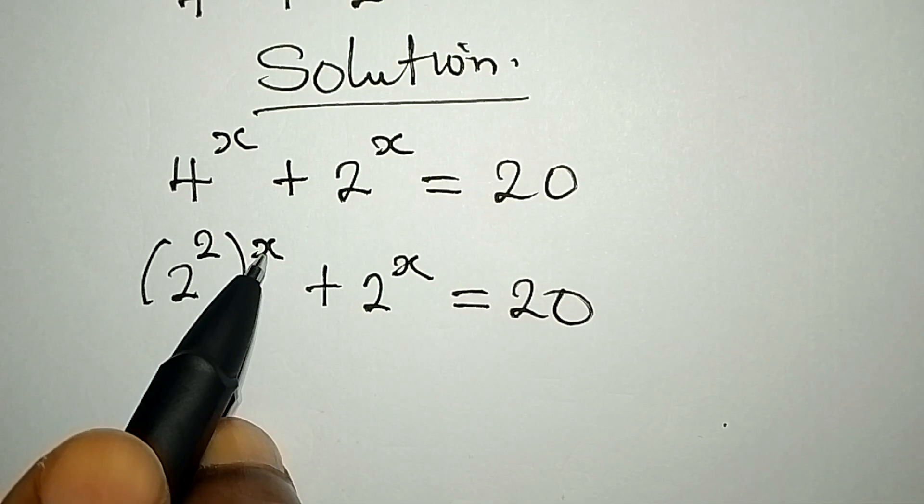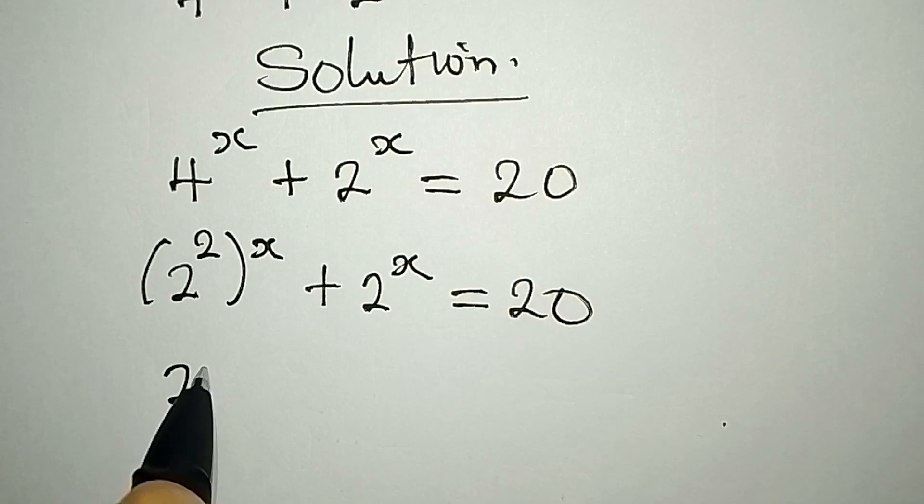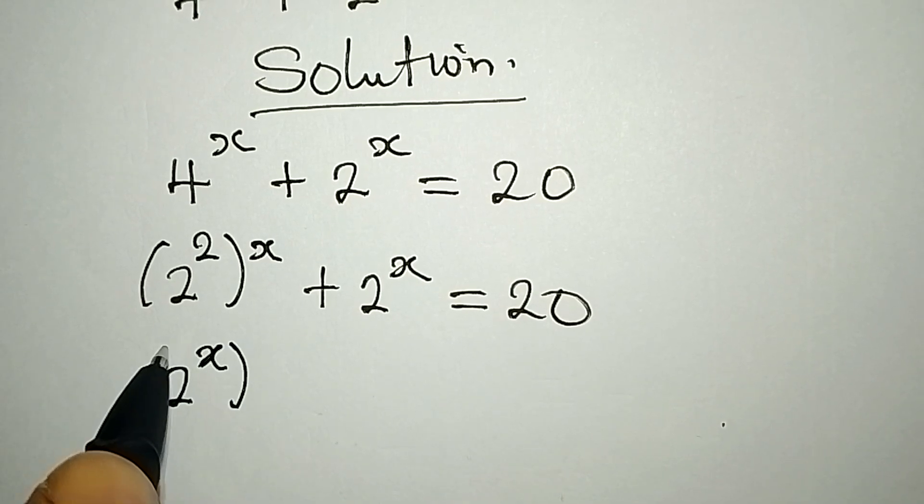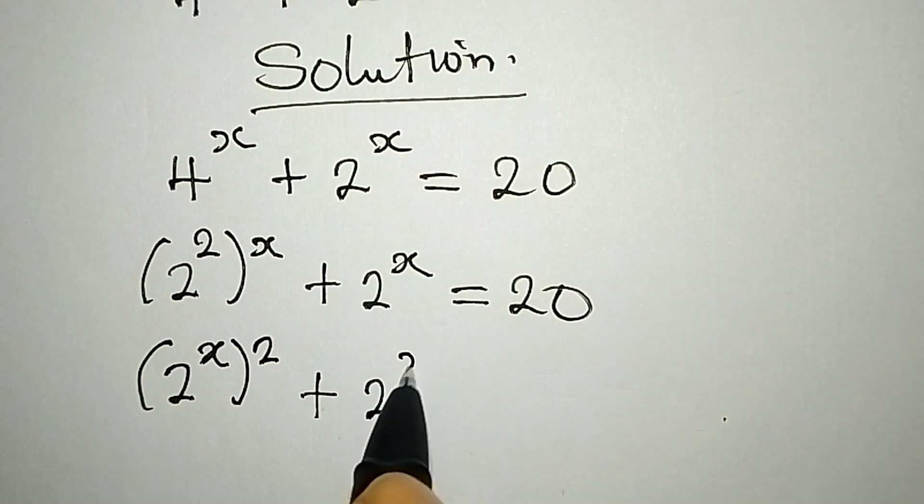2 on x, x can come here, 2 can go there. So this will be the same thing as 2 to the power of x to the power of 2, then plus 2 to the power of x equals 20.